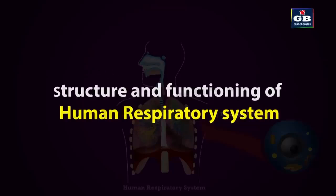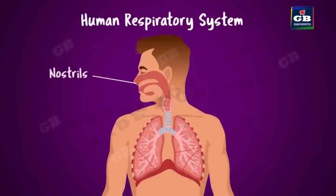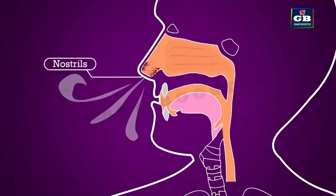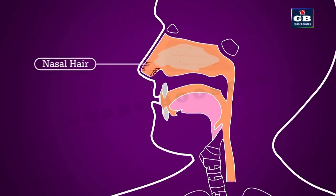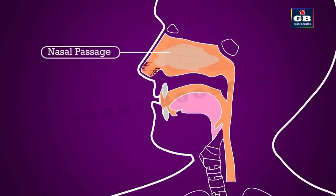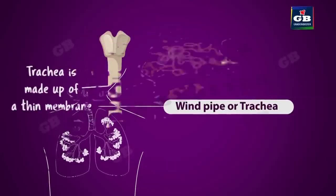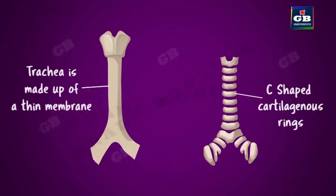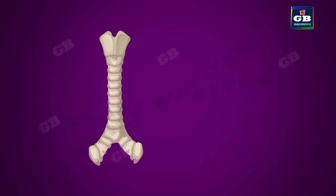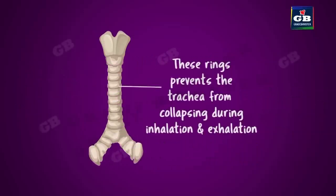The human respiratory system begins with a pair of nostrils. Air enters the nose through the nostrils. Thin hairs in the nasal passage filter the dust particles we breathe in. The nasal cavity is lined with mucus, making the air moist and humid. This moist air enters the windpipe, also called the trachea, which is supported by C-shaped cartilaginous rings that keep it open all the time.